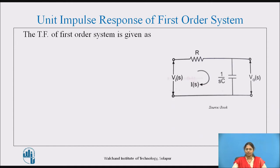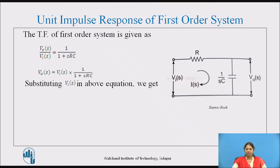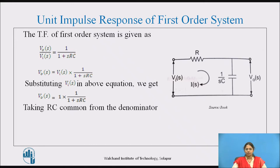The transfer function of the first-order system is Vo(s)/Vi(s) = 1/(1 + sRC), which gives Vo(s) = Vi(s)·(1/(1 + sRC)). Substituting Vi(s) = 1 (Laplace transform of unit impulse), we get Vo(s) = 1/(1 + sRC). Taking RC common from the denominator, this can be rewritten as Vo(s) = (1/RC)·(1/(s + 1/RC)).